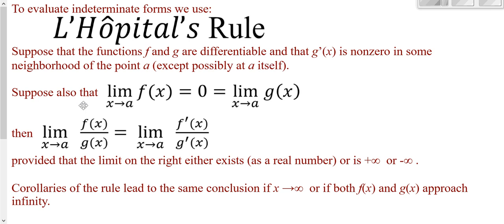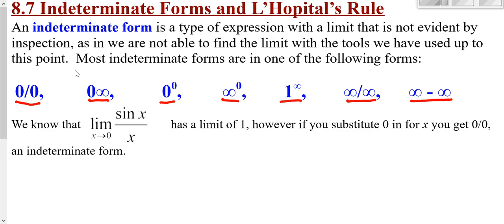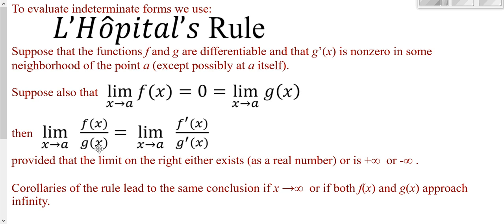L'Hôpital's Rule says: if you're taking the limit of a fraction and the top is 0 and the bottom is 0, you can take the limit of the derivative of the top over the derivative of the bottom — not the quotient rule, just derivative of the top over derivative of the bottom. You can extend L'Hôpital's to corollaries covering infinity over infinity as well. However, L'Hôpital's Rule requires the expression to be a fraction before you can use it.